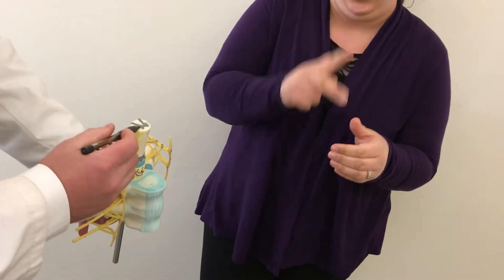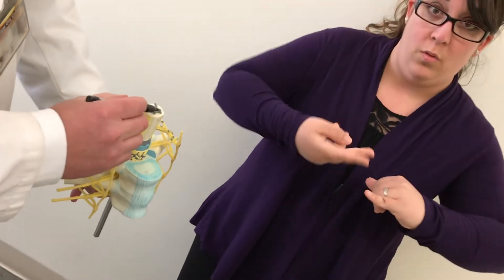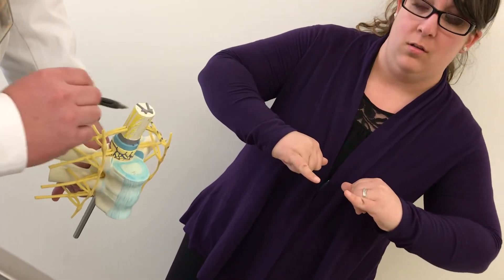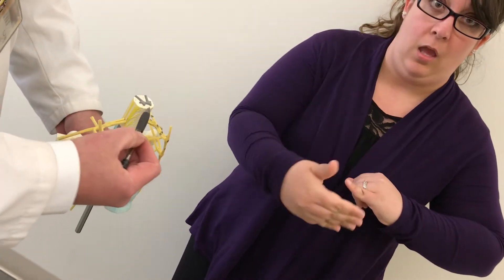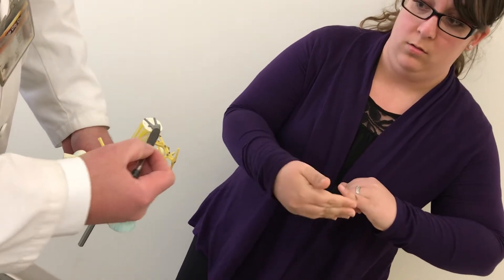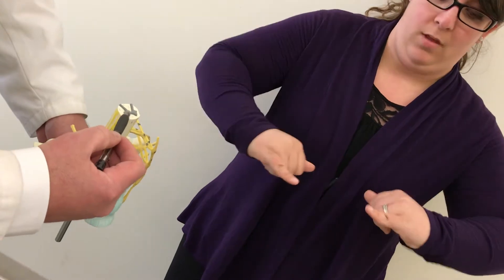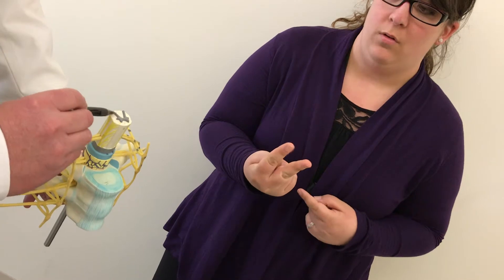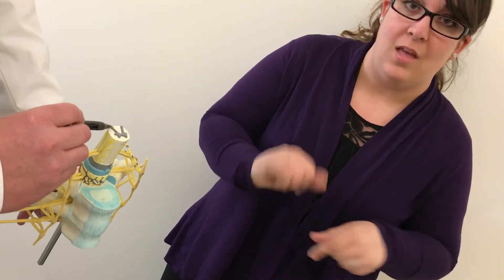Alright, so that means that these horns of the gray matter are, if this is anterior, this is the ventral horns here and here. These are lateral horns outside of it, and these would only be found from T1 to L2. And then this is the dorsal horn that's going to be sensory.